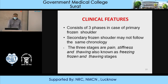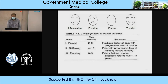The clinical features consist of three phases in any case of primary frozen shoulder. Secondary frozen shoulder may not follow the same chronology. The three stages include pain, stiffness, and thawing — also known as freezing, frozen, and thawing stages. The painful phase usually lasts 2 to 9 months with insidious onset of pain and progressive loss of motion. Phase 2 (stiffening): 4 to 12 months, with pain, progressive loss of motion, and muscle atrophy leading to weakness. Phase 3 (thawing): pain subsides and motion gradually returns after 1 to 3 years.